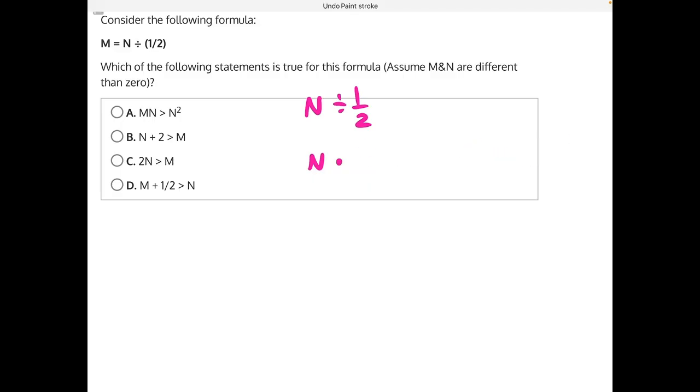So we can rewrite our equation to say M is equal to 2N, and now we can substitute that 2N in for every M in each of our answer choices, and that'll help us figure out what is a true statement.